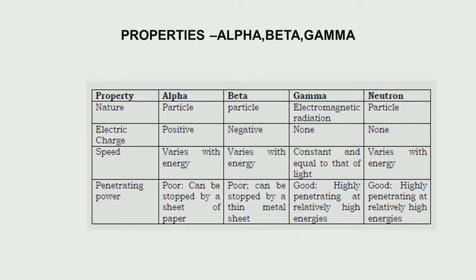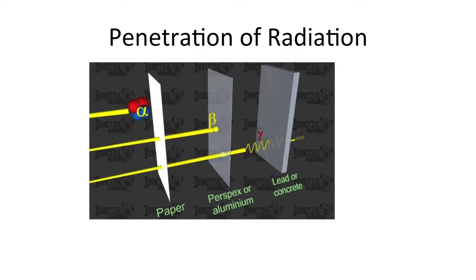Let us compare the properties of alpha, beta, gamma, and neutron radiation. Alpha has a positive electric charge, beta is negative, gamma has no charge, and neutrons also have no charge. Penetrating power is most important: alpha has very poor penetrating power and can be stopped by a sheet of paper; beta is not very penetrating and can be stopped by a metal sheet; gamma is highly penetrating and requires a good shield such as lead; neutrons are also highly penetrating and require lead or concrete for protection.